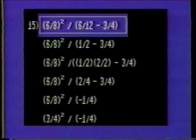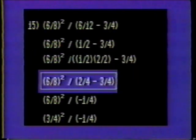Number fifteen: six-eighths squared divided by six-twelfths minus three-fourths. Solve for the items in parentheses first. Since twelve is two times six, and six is present in both the numerator and the denominator, the result is one-half. Since two will divide four evenly, let four be the least common denominator. Then multiply one-half by two over two. Two-fourths minus three-fourths is negative one-fourth. Now our overall problem has changed: six-eighths squared divided by negative one-fourth.